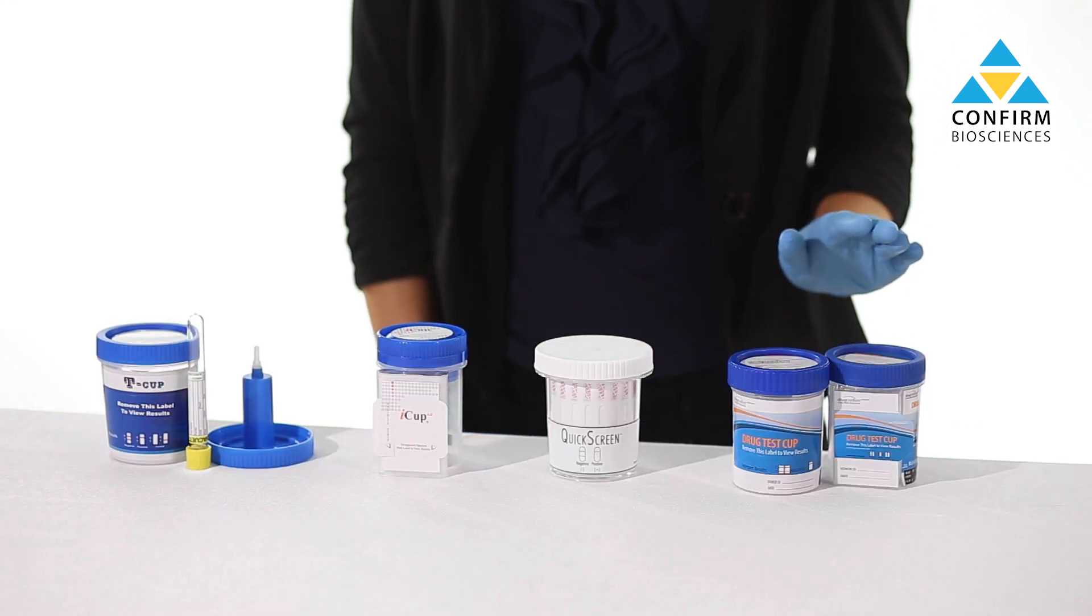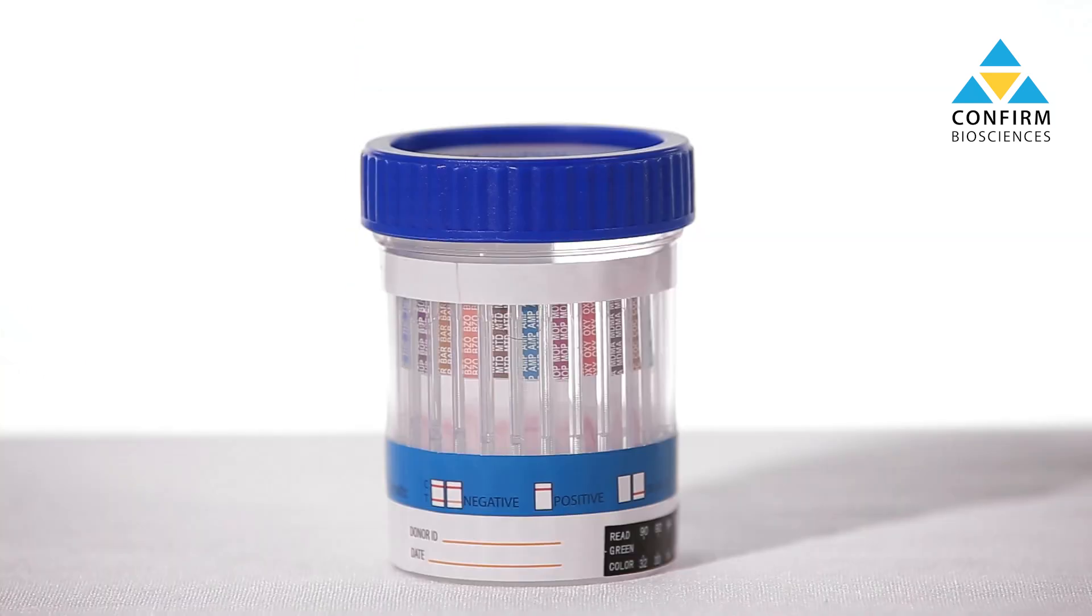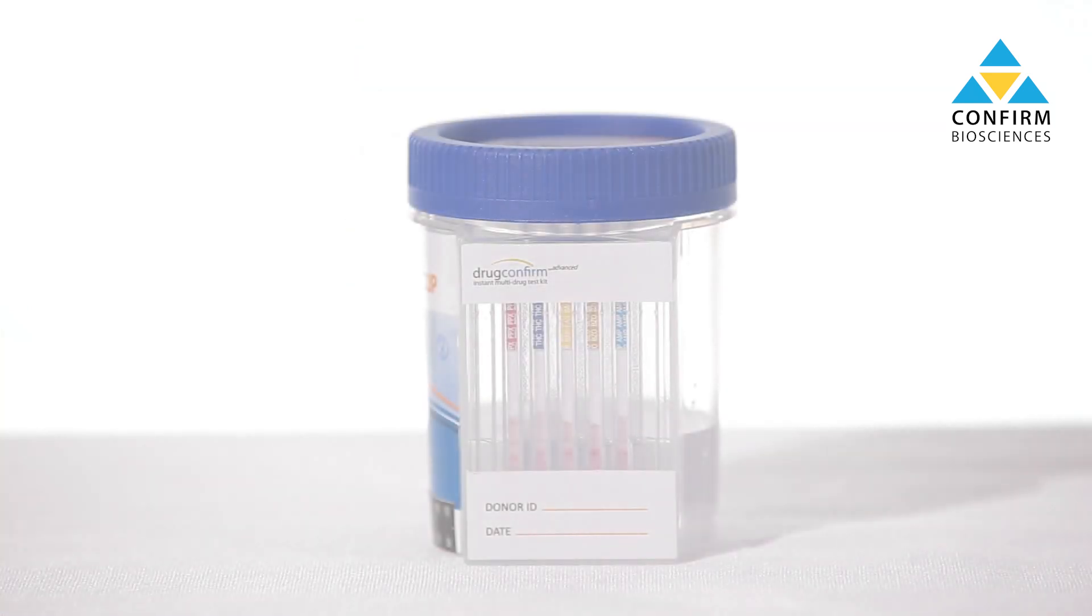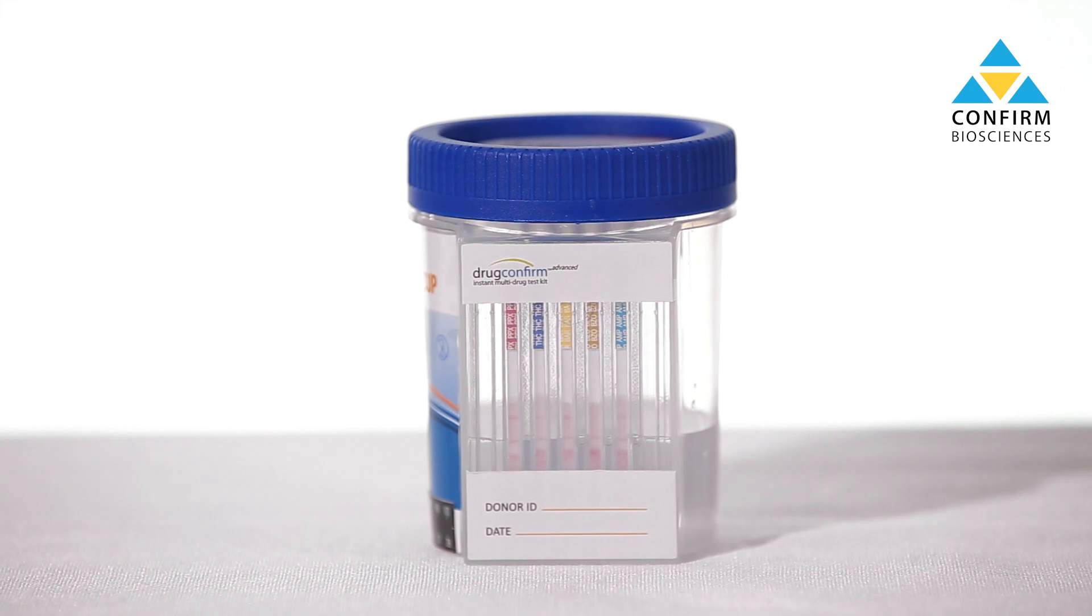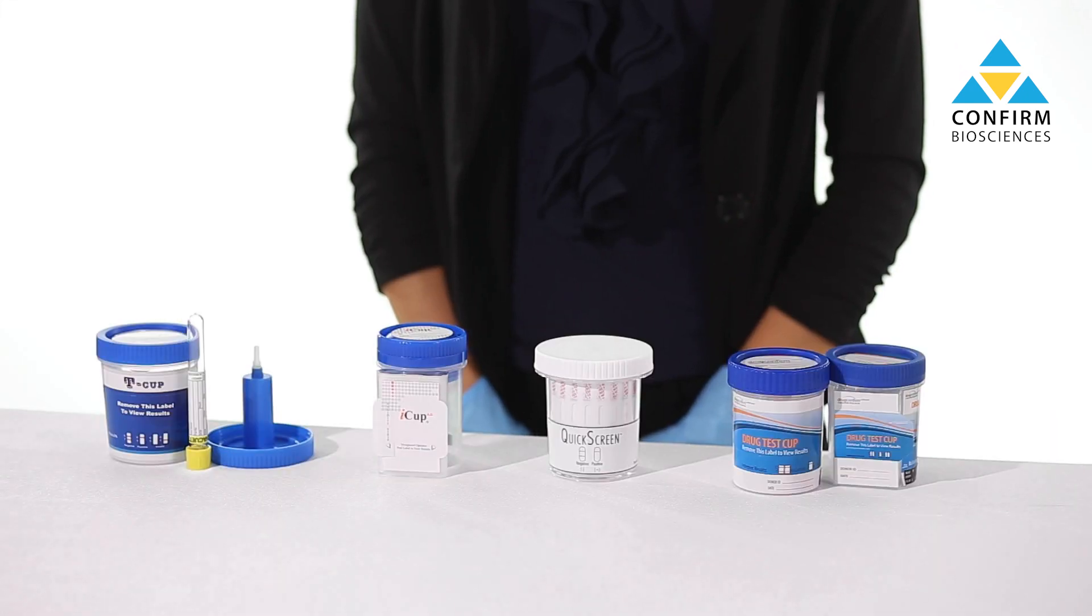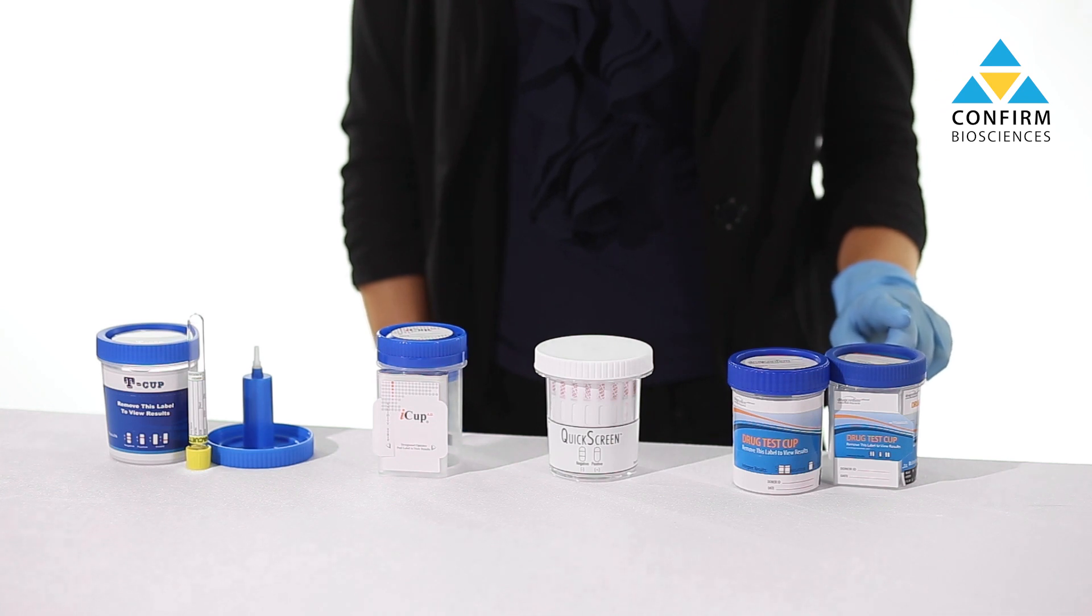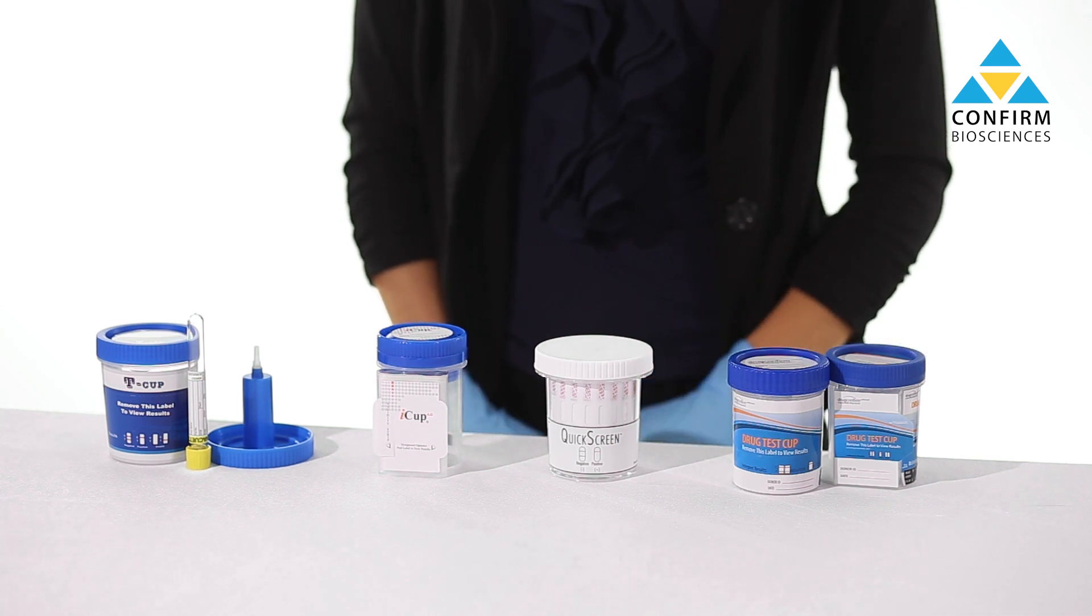Our own drug confirm advanced cup is fully customizable and can screen for up to 14 drugs in a single test. The cups are also available with the 80 hour ETG alcohol test, synthetic marijuana also known as K2 spice and adulterant testing variations. Drug confirm advanced is also available in a flat panel version which makes photocopying results easy.